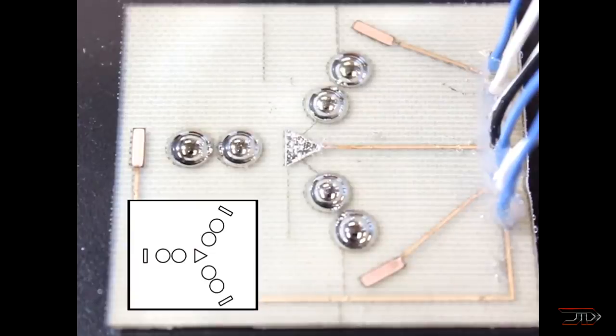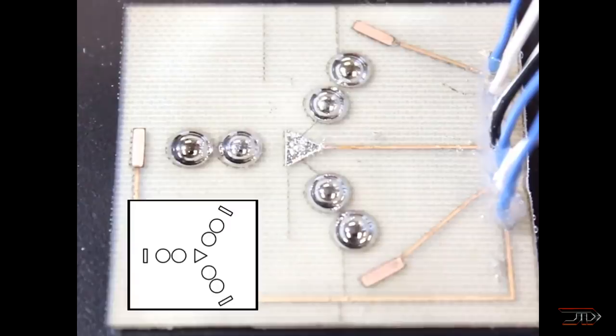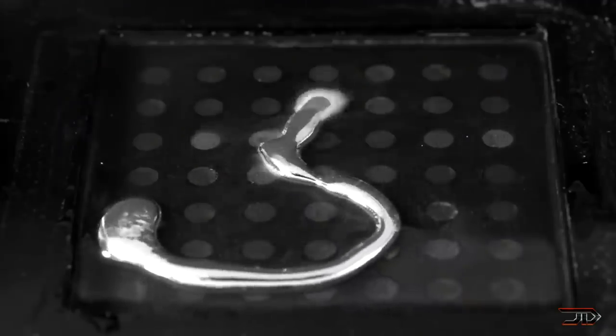This method is no secret, and multiple institutions are experimenting with this type of liquid metal transistor. Ultimately, you can program different shapes through electromagnetic fields.